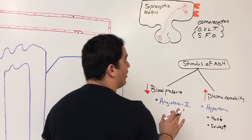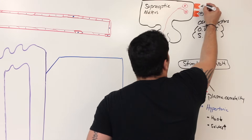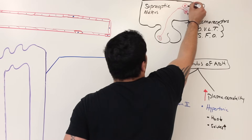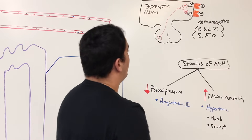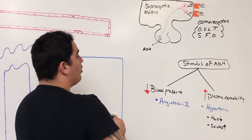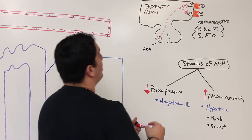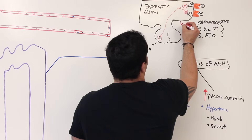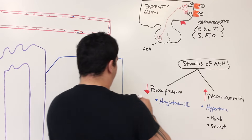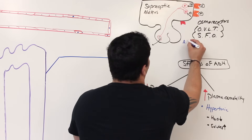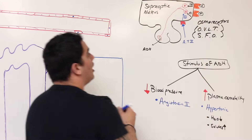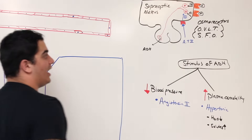If these osmoreceptors are stimulated by high plasma osmolality, they send signals to the supraoptic nucleus and stimulate it to start releasing the antidiuretic hormone. How does blood pressure stimulate? There are receptors for angiotensin II on the hypothalamus. Angiotensin II binds onto those receptors and sends signals that stimulate the hypothalamus to send action potentials down and release the ADH.